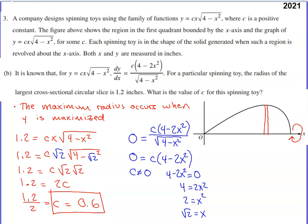In Part B, you are told that the derivative of this function is given by this fraction. And for a particular toy, the radius of the largest cross-sectional circular slice is 1.2 inches. What is the value of c for this particular spinning toy?